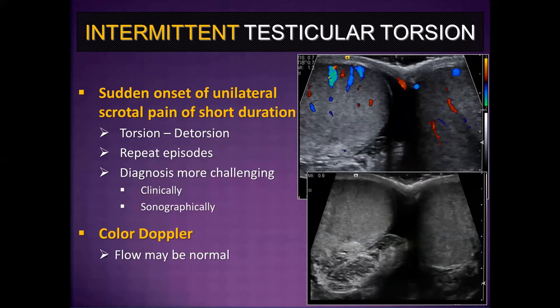Intermittent testicular torsion presents with sudden onset of unilateral scrotal pain, often of short duration, because the torsion detorses. Patients may have repeat episodes. The diagnosis is challenging both clinically and sonographically — the patient may arrive at the ED with acute scrotal pain, but by the time they get to ultrasound, the pain has resolved, and there may be no sonographic findings and even normal color Doppler flow.